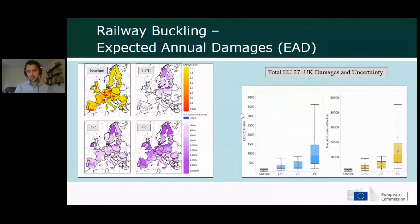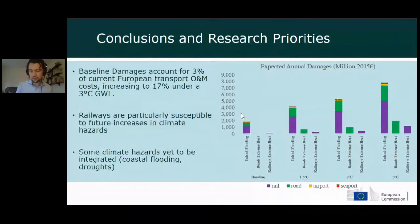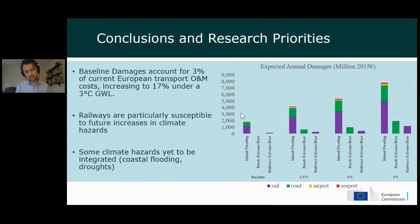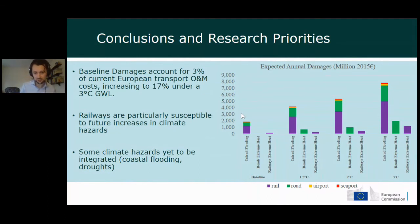Putting all hazards together: inland flooding by far represents the largest of the three. The road extreme-heat analysis lacks a baseline value because we require 30 years of historical data from 1950–1980 to determine the performance grade that was in use at that time. Key takeaways are that railways are particularly susceptible both from inland flooding and from the increasing damages due to railway buckling.